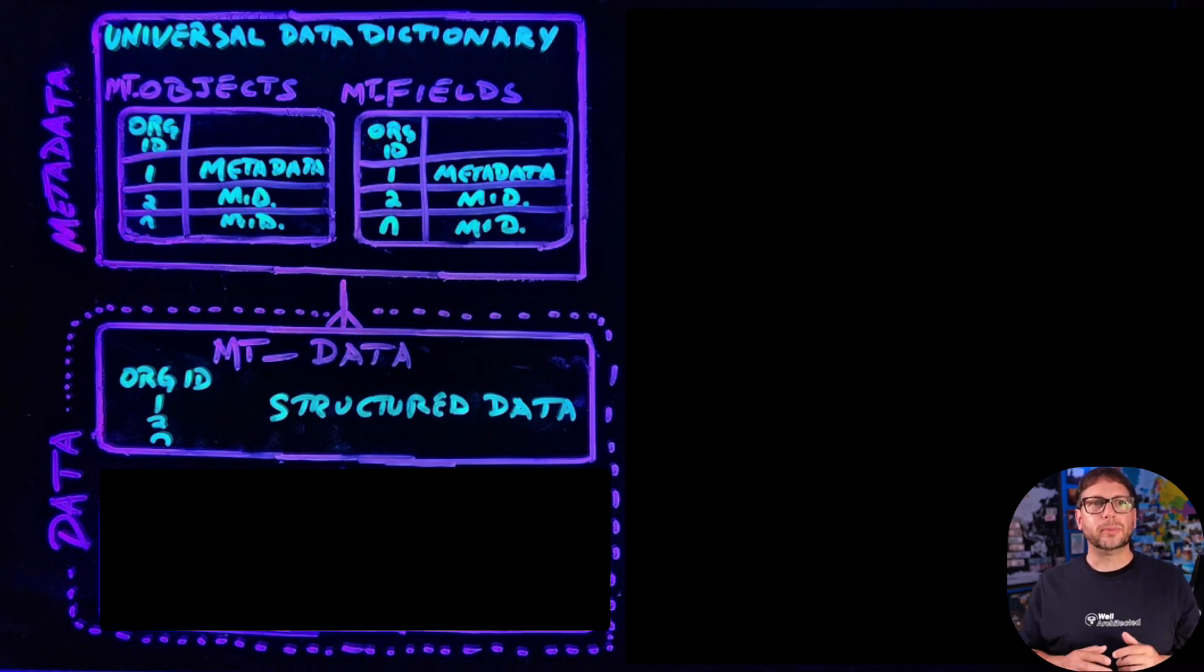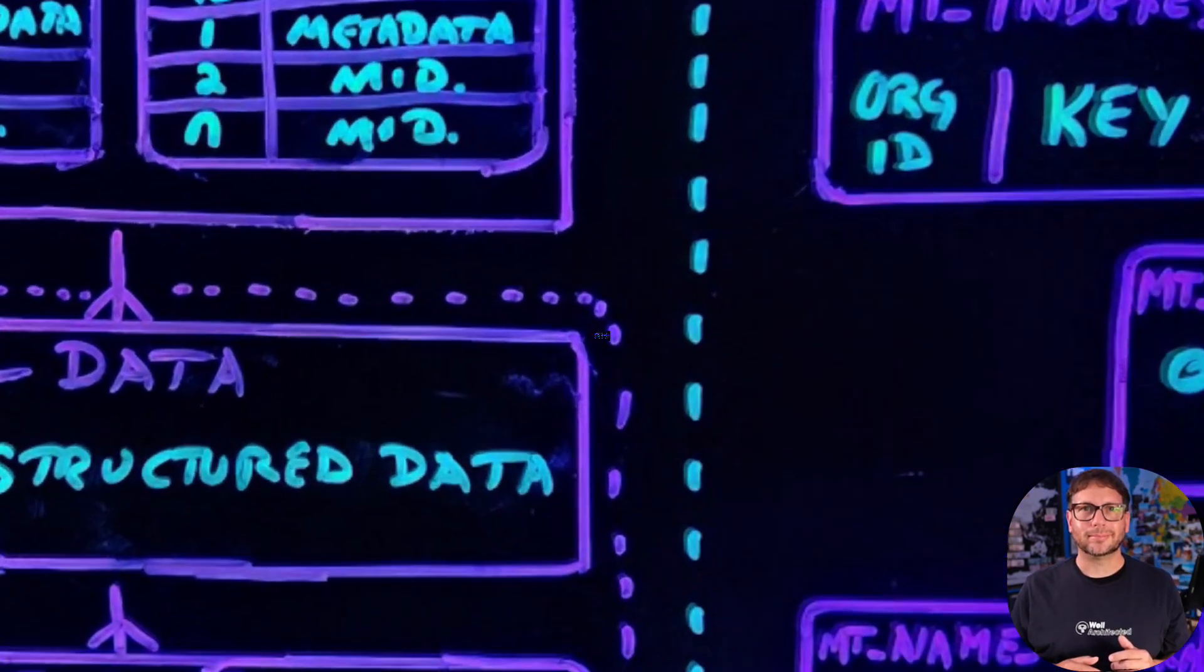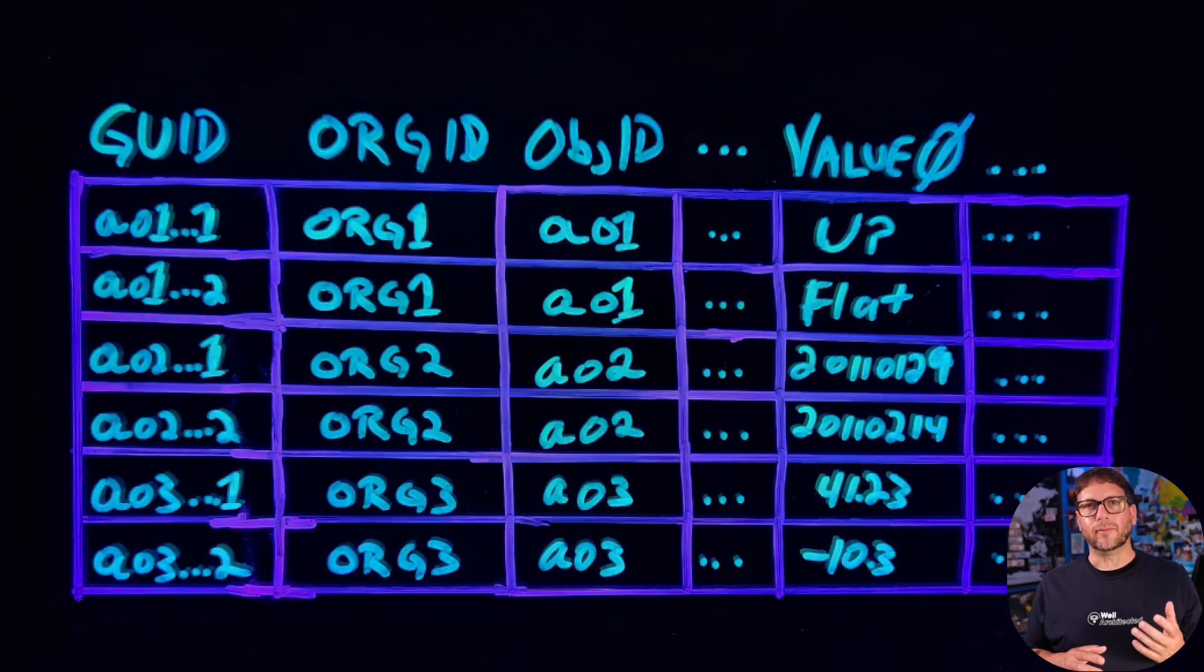Let's zoom in on this table and take a closer look. Each row includes identifying fields like a globally unique identifier or GUID, the ID of the org that owns the row, and the encompassing object identifier. The value columns, also known as flex columns, store application data that maps to the objects and fields defined in the metadata tables.